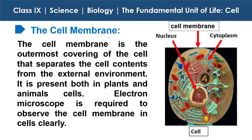First is the cell membrane. The cell membrane is the outermost covering of the cell that separates the cell contents from the external environment. It is present both in plants and animal cells. An electron microscope is required to observe the cell membrane clearly. The outermost covering of the cell is nothing but the cell membrane, separating the contents of the cell from the external environment. It is the outermost covering of only the animal cell, not of the plant cell.